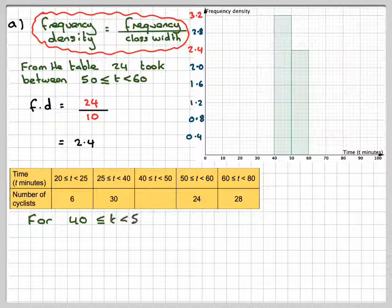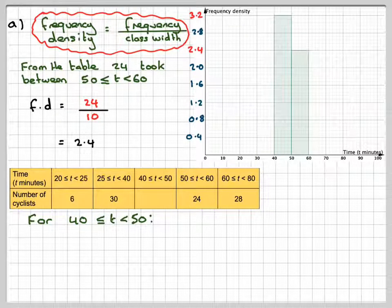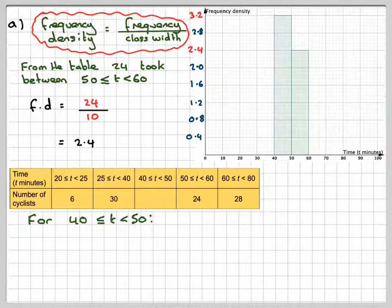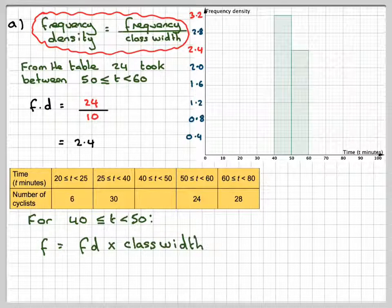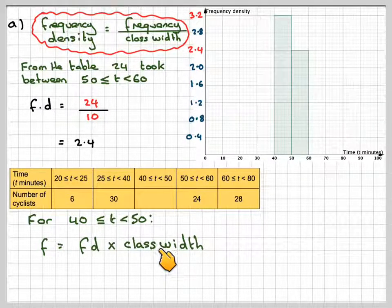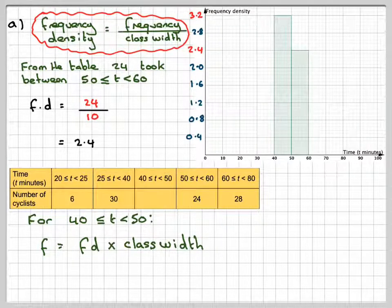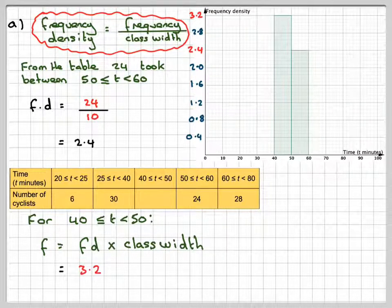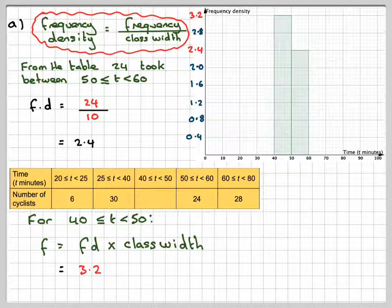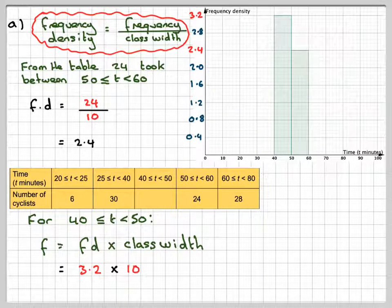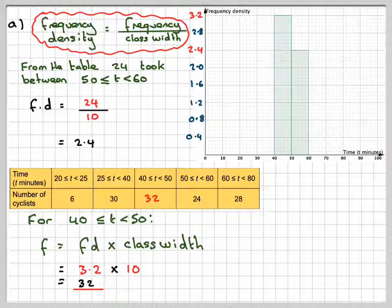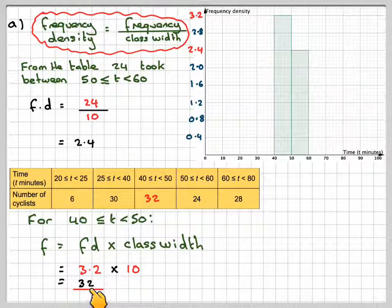So for the 40 to 50, which is what we have to find, the missing one here, we know that the frequency, rearranging this, is going to be the frequency density times the class width. We've just worked out the frequency density is 3.2, and we know the class width there is 10, so that gives a value of 32 cyclists.